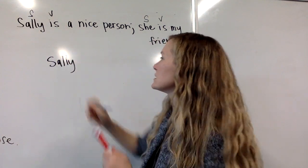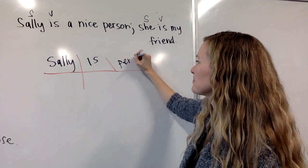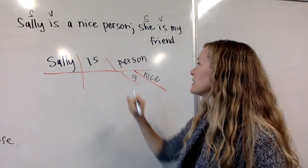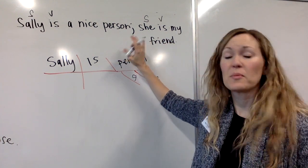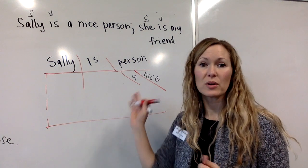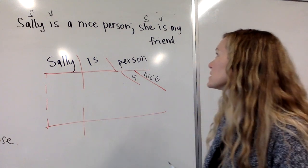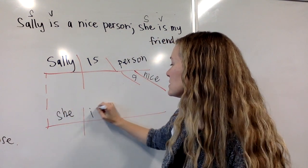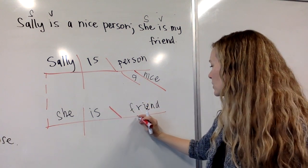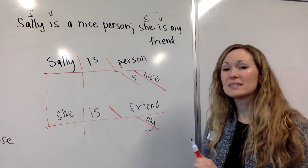When we diagram this, start with what we know. Sally is — subject and verb. Sally is what? A person. What kind of person? Nice. Which one? A. Now we have our semicolon, but we don't diagram punctuation — that's the cool thing with a semicolon, you don't need to worry about it. We just connect the sentences the way we do for compound sentences, and there won't be any conjunctive adverbs to modify the verbs. Next: she is — what is she? Friend. Whose friend? My friend. And there we have diagrammed a compound sentence with a semicolon connecting.